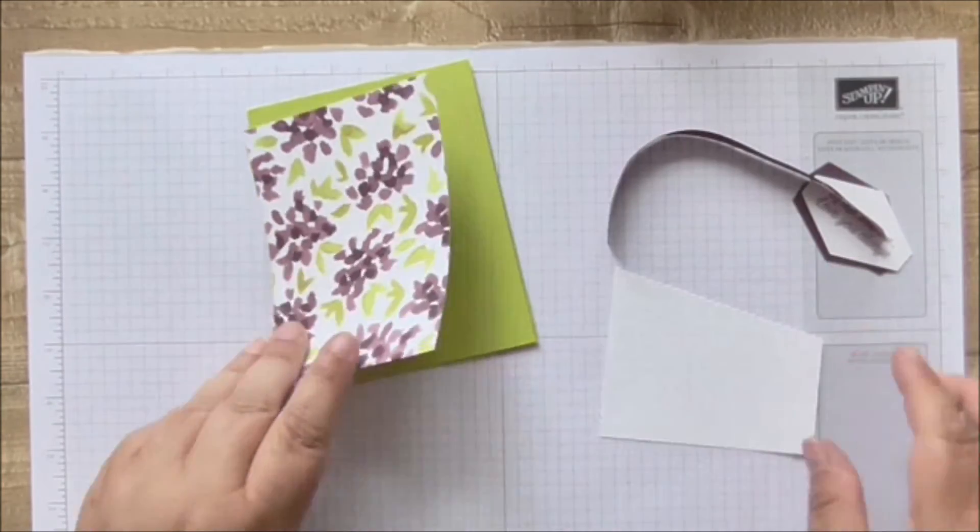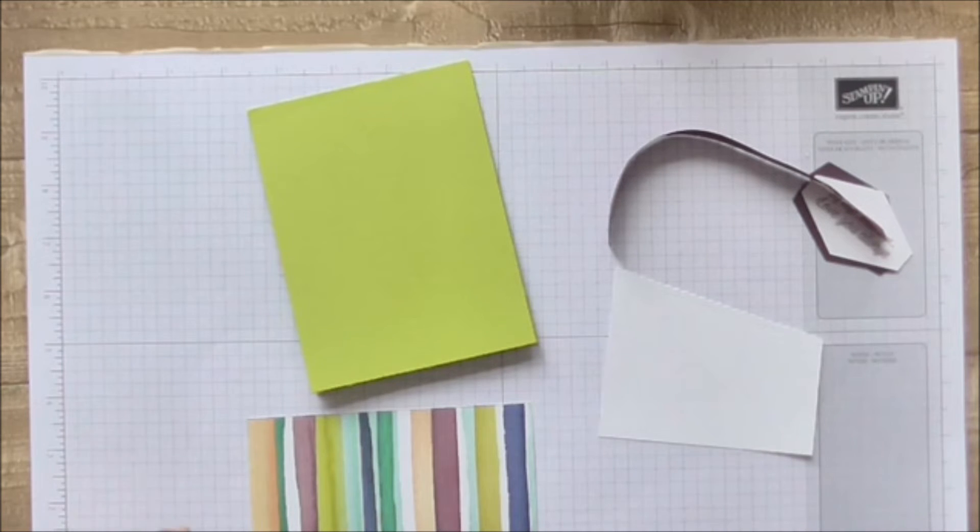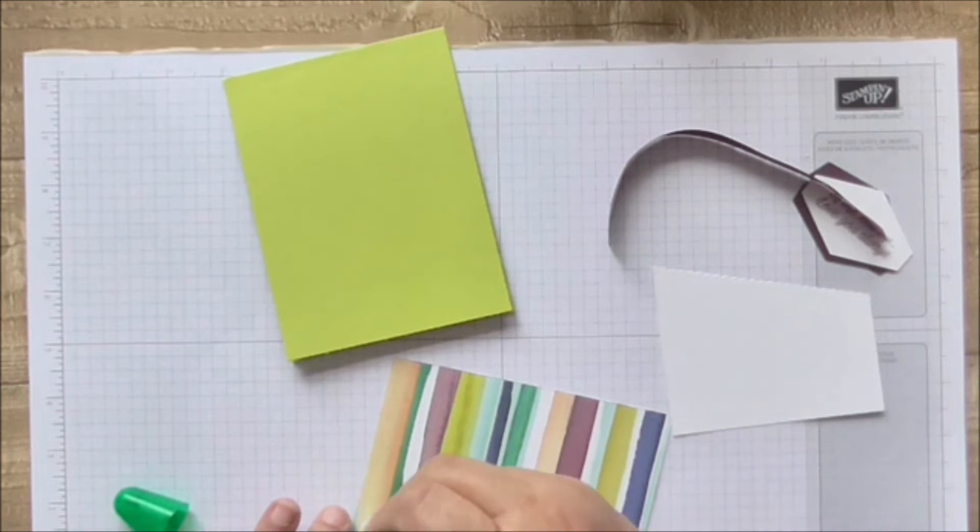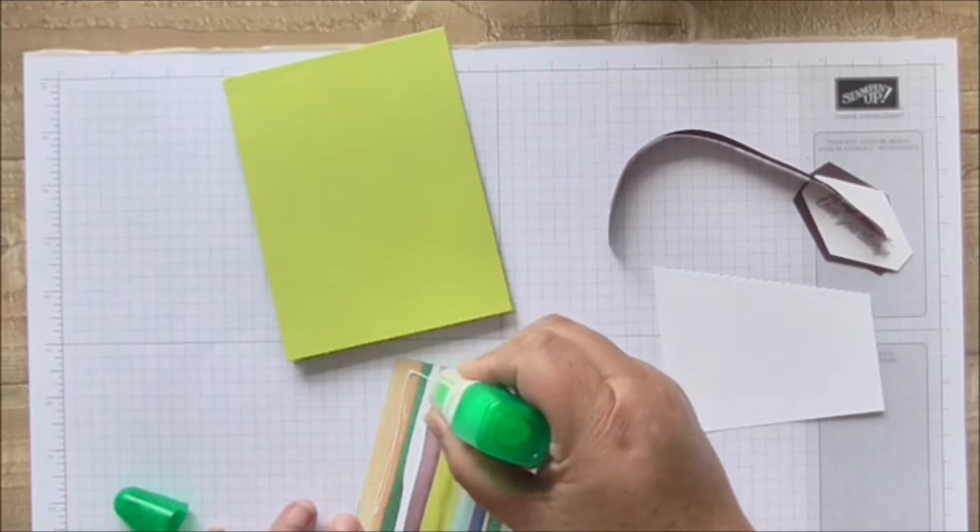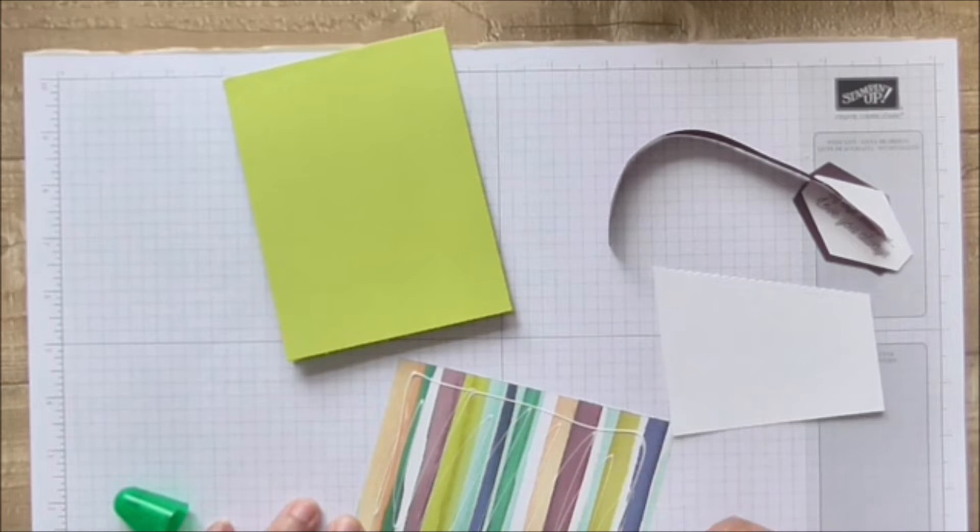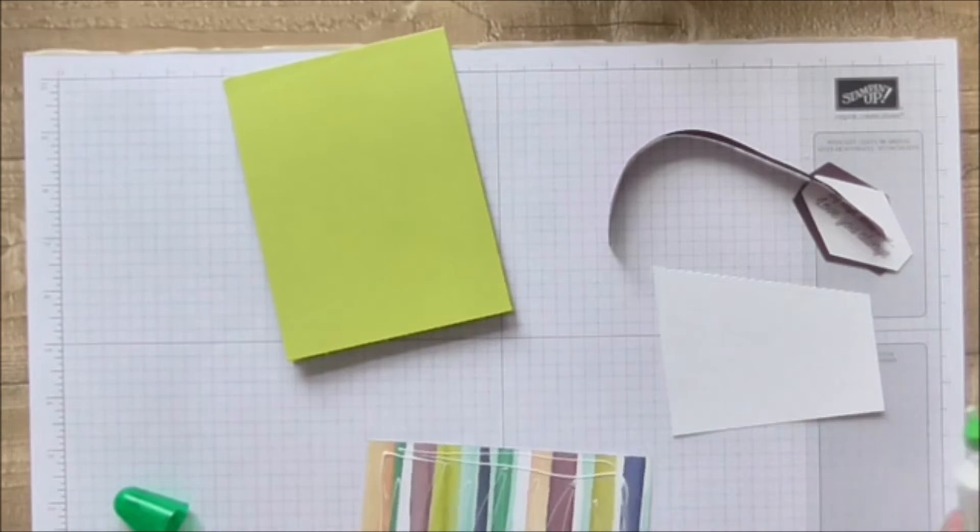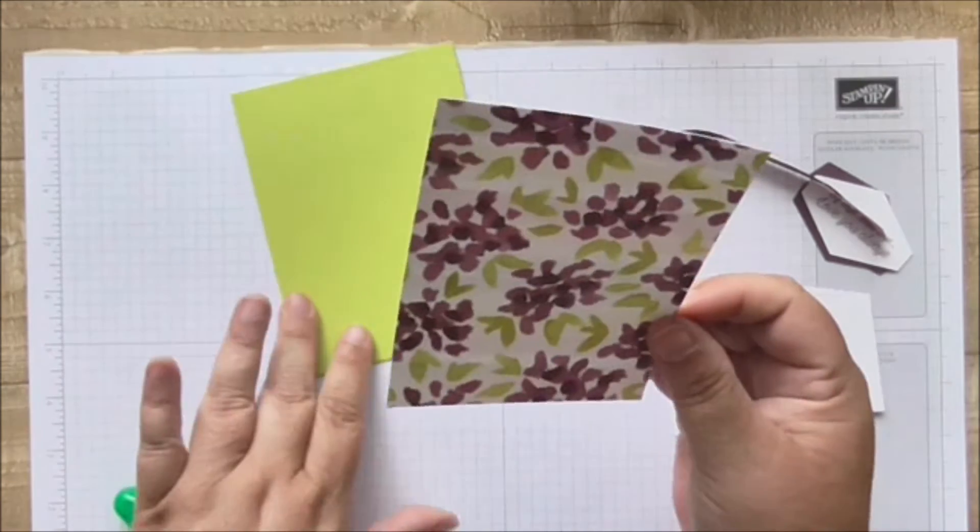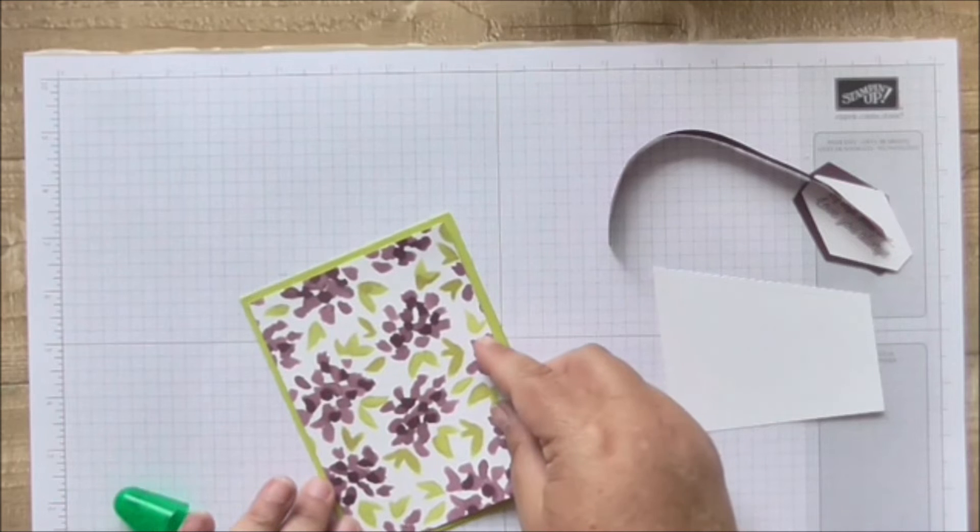And that's all there is to this card. So first things first is to just put some Tombow on the back of here or some snail or tape, whatever you want to use, and pop that onto the base.